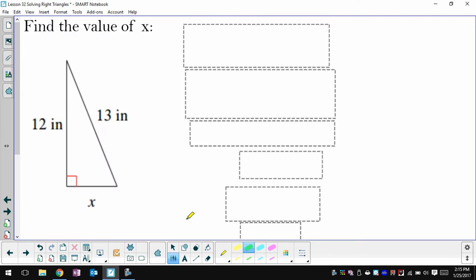So if we encounter a right triangle problem, and the thing that we're looking for is one of the side lengths, and we know two of the three side lengths, we can always use the Pythagorean Theorem to figure out the third.